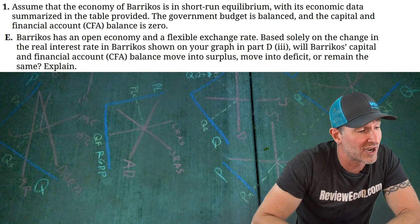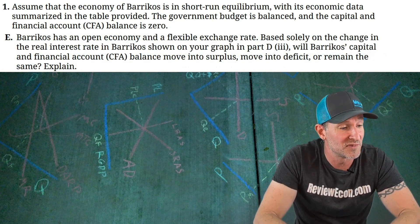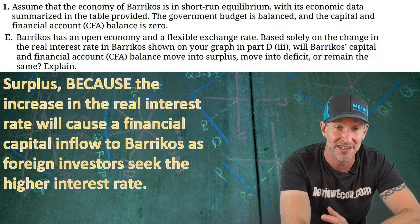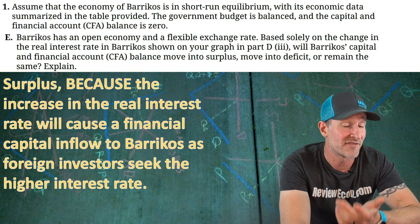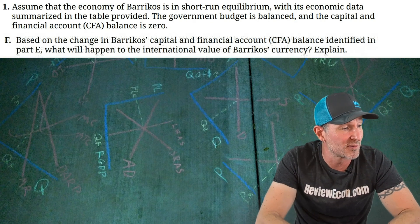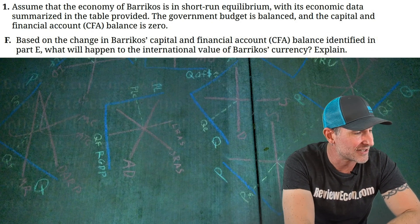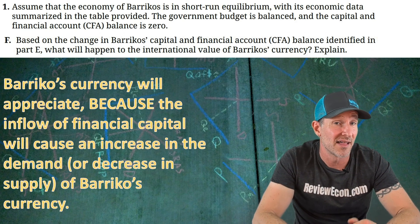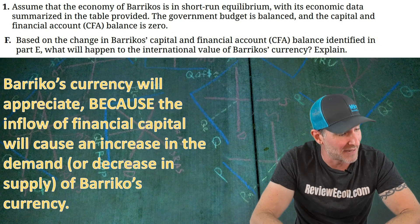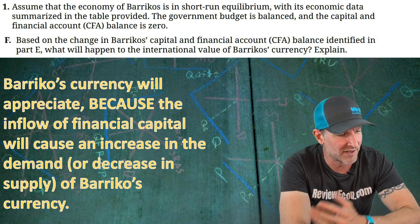Moving on to Part E. Barricos is an open economy with a flexible exchange rate. Based solely on the change in the real interest rate from our loanable funds graph, will the capital and financial account move into a surplus, a deficit, or remain the same? It's going to become a surplus because the increased real interest rate causes a financial capital inflow to Barricos, as foreign investors seek that high interest rate. On to Part F — Barricos' currency is going to appreciate. Foreign investors seeking the higher interest rate create an inflow of financial capital, increasing demand for Barricos currency. A decrease in supply of Barricos currency would also be accepted. Either increase in demand or decrease in supply will cause the currency to appreciate.